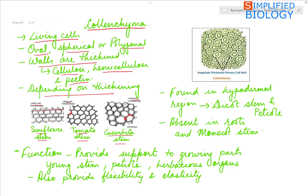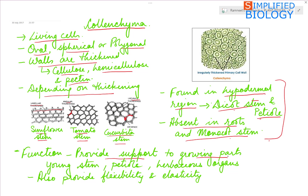Collenchyma are found in the hypodermal region — the region below the epidermis in dicot stem and in petiole — while they are absent in roots and monocot stem. Their function is to provide support to the growing parts of the plant, such as herbaceous organs, young stem, and petiole, also providing them flexibility and elasticity.